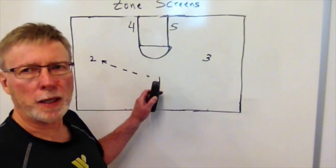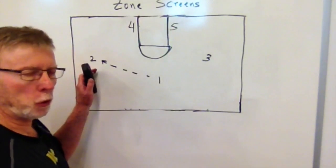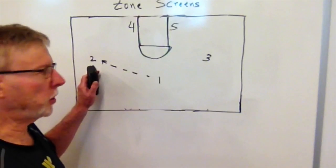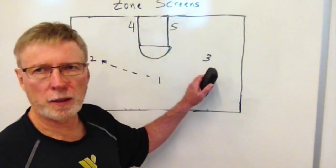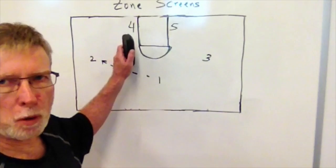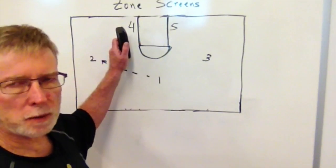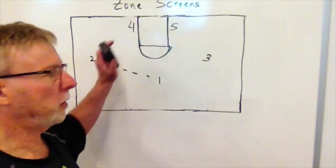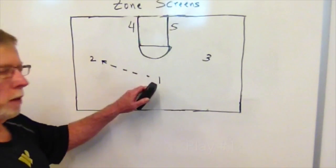On play number one, the one man is going to be getting the shot. Play number two, the two man is going to be getting a shot. Play number three, the three man is going to be getting the shot. And on play number four, it's possible that the four man will get a shot.